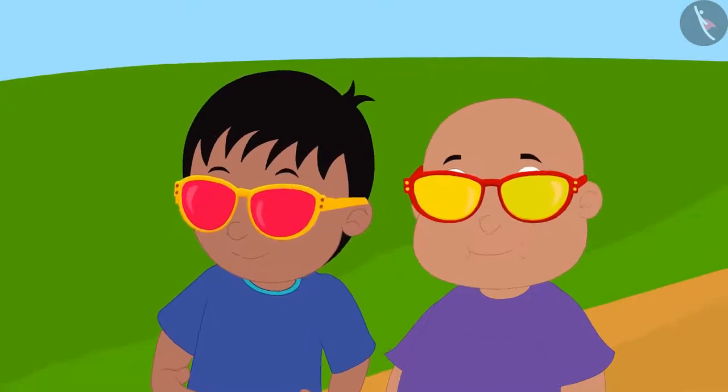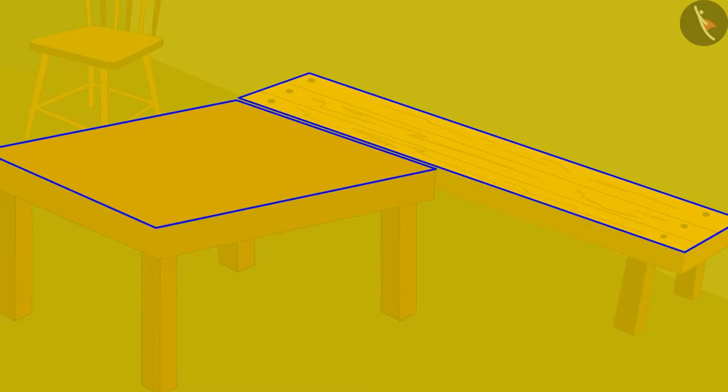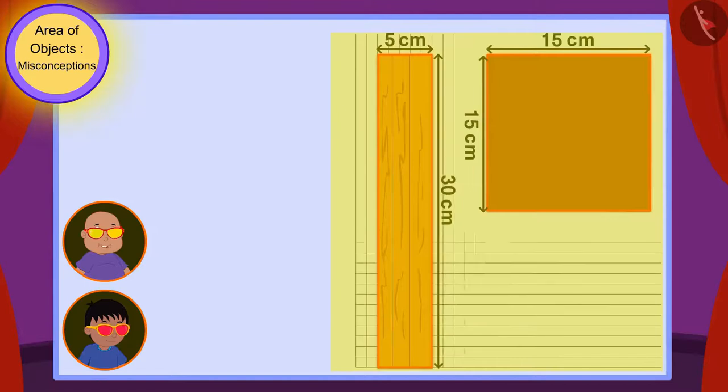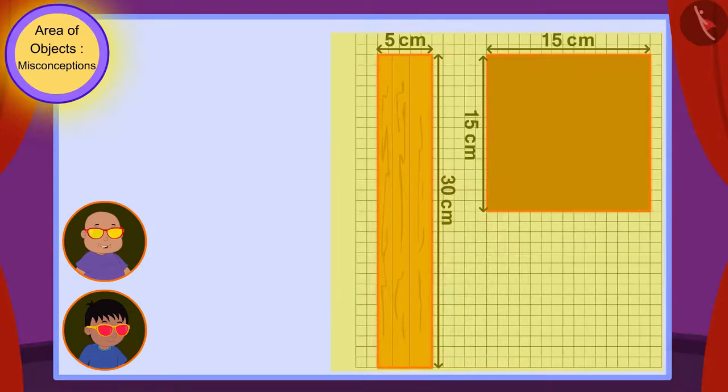Then, Babalu saw the surfaces of those tables with his glasses. Raju, on looking through my glasses, I am able to see a grid paper being formed on the surfaces of these tables.